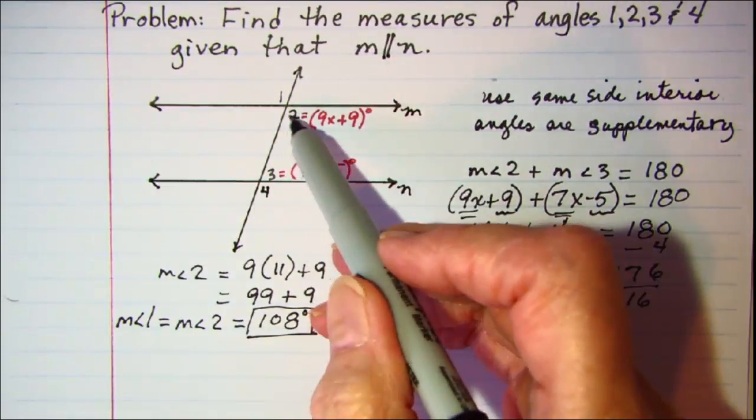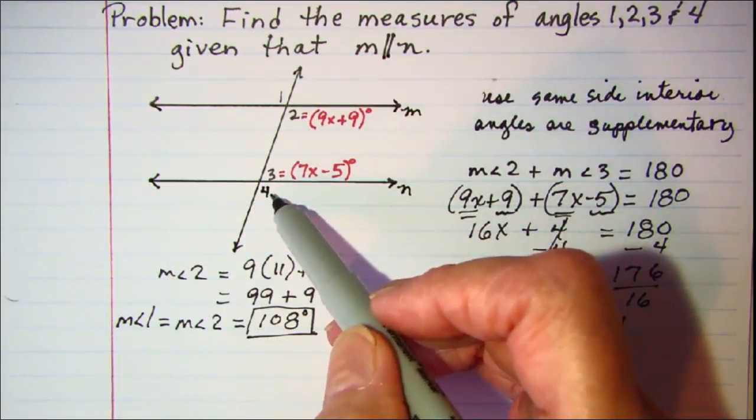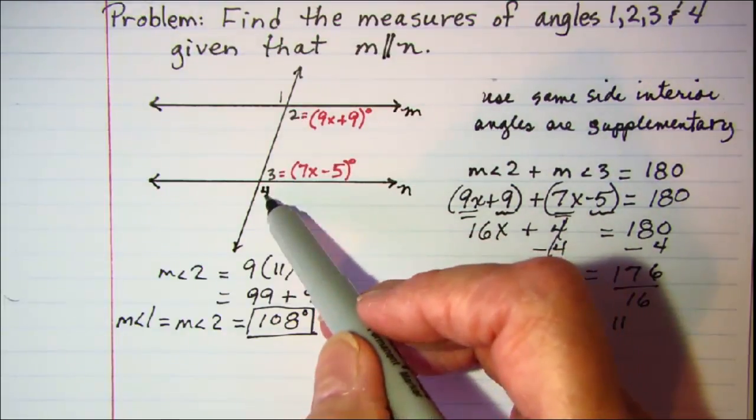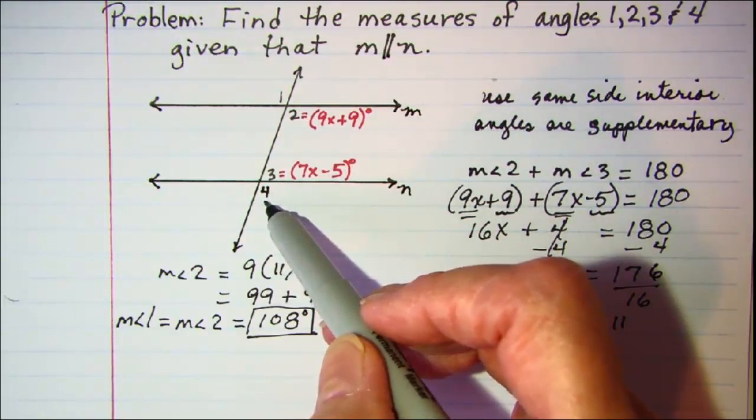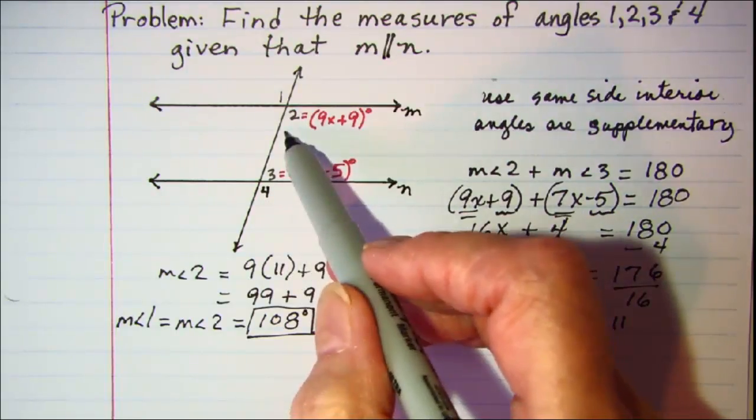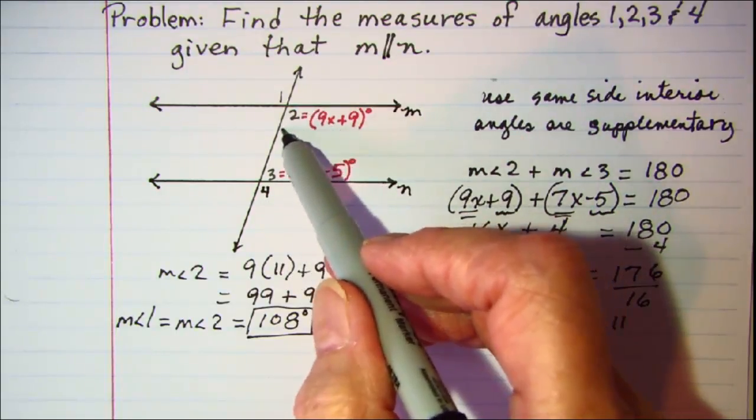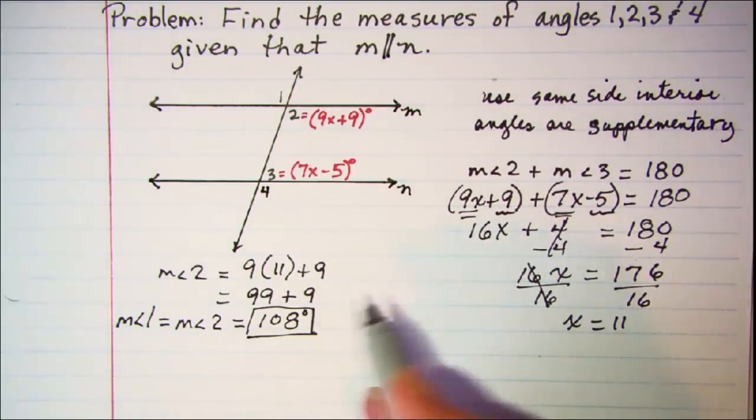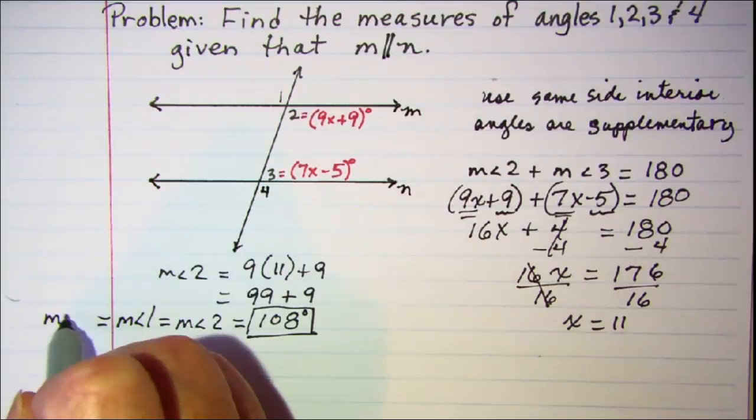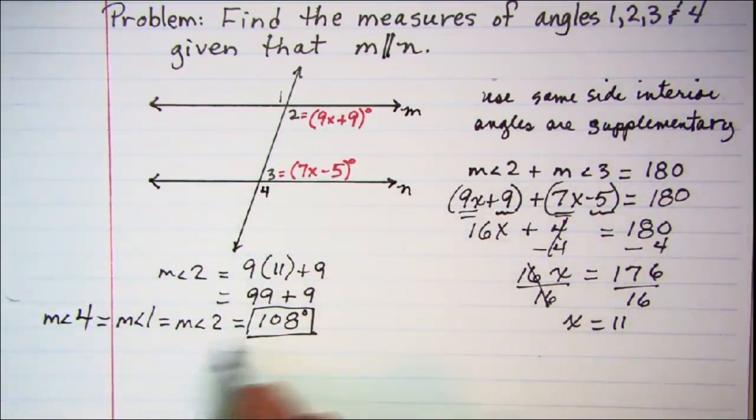We know that angle 2 and angle 4 are corresponding angles, and when lines are parallel cut by transversal, the corresponding angles are equal, so angle 4 and angle 2 are also equal to 108. So let me also write that angle 4 is equal to 108.